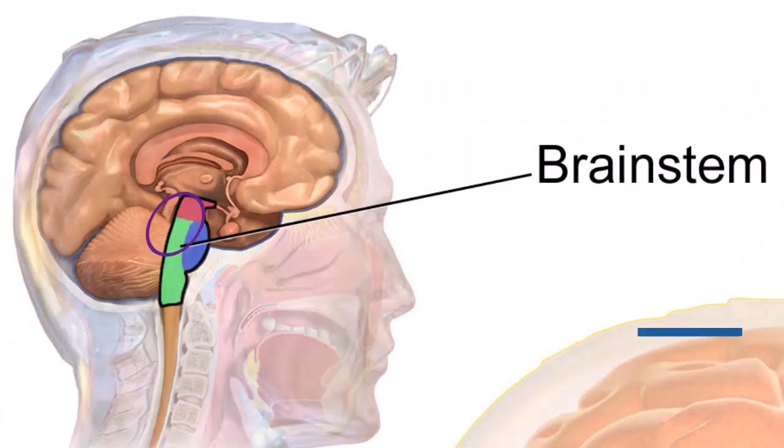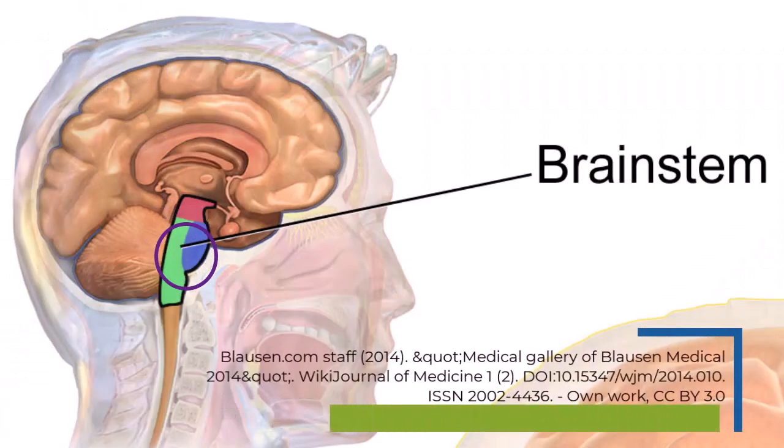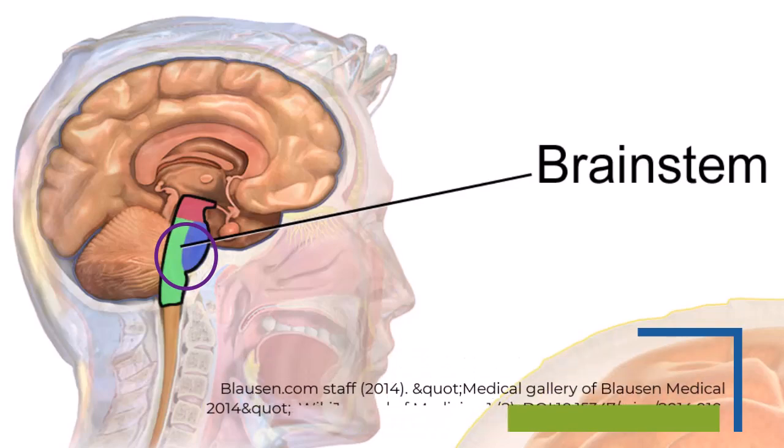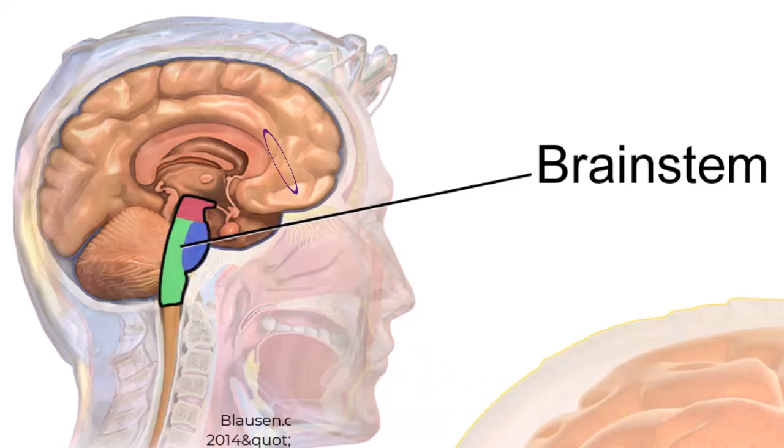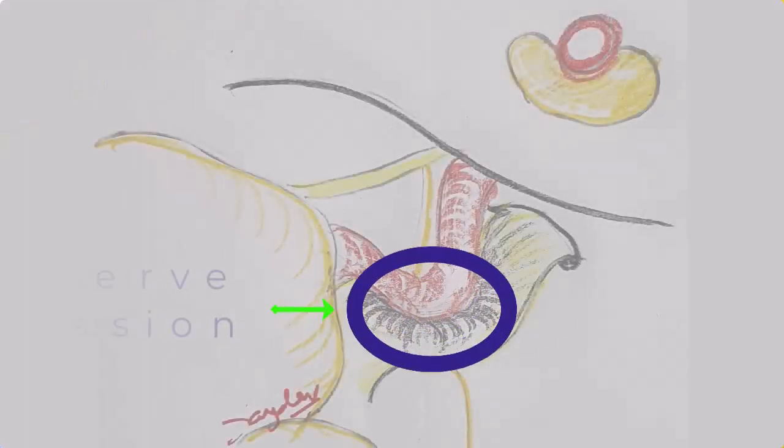The nerve actually begins way behind. It is in the small brain, as it is typically called. The nerve exits from there and goes past a lot of structures to finally come and supply the muscles of the face. Along its path, especially where it has just come out of the brain stem.